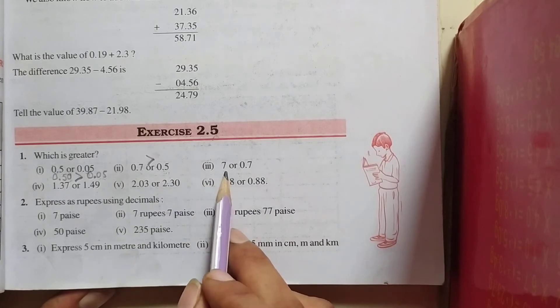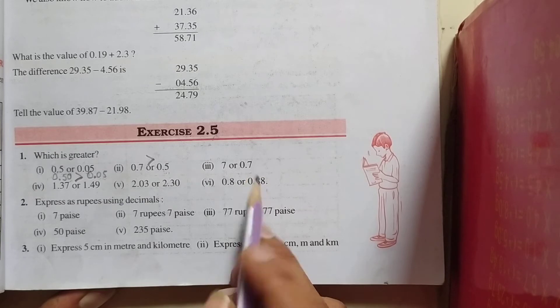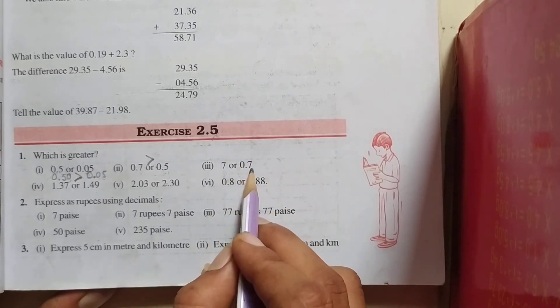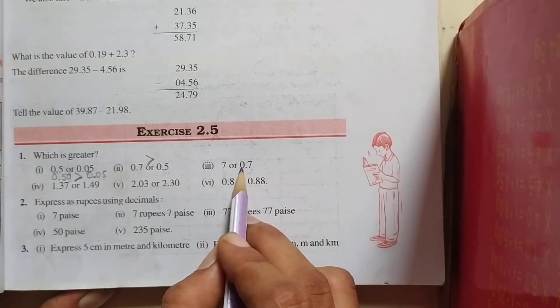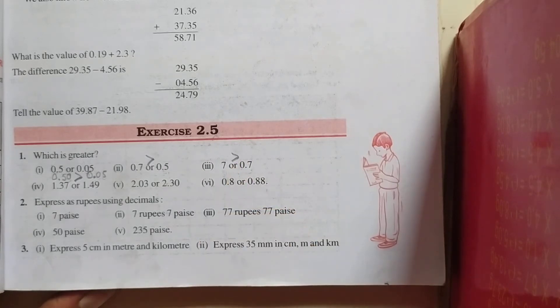Third one. Here is 7 or 0.7. So students, of course, 7 is greater because here is 0.7. It is a whole number and it is a decimal. Here we can see 0 as whole number. So, 7 greater than 0.7.